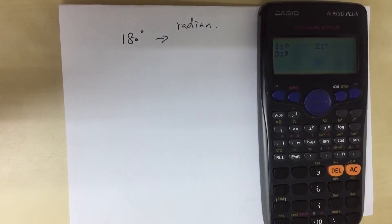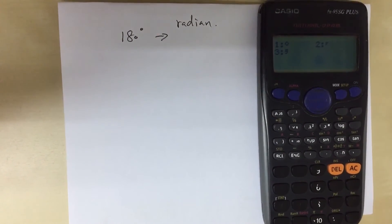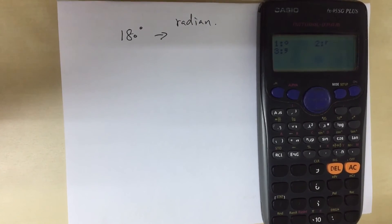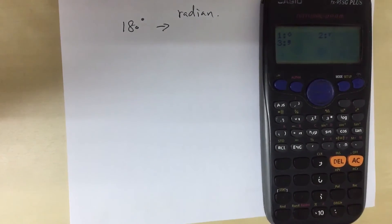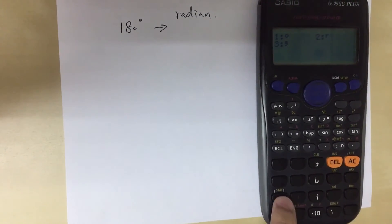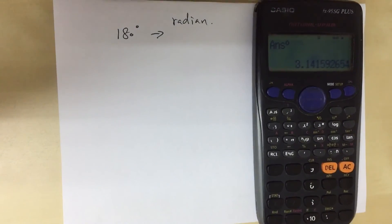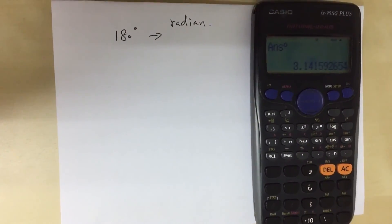You can see three options—one, two, three. Because you're converting degree to radian, you choose option one, then press equals. By doing this, you can find the result in radians.